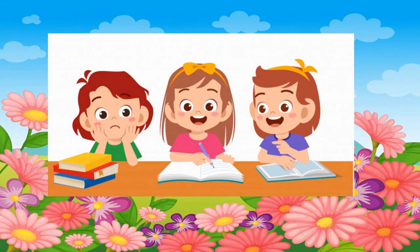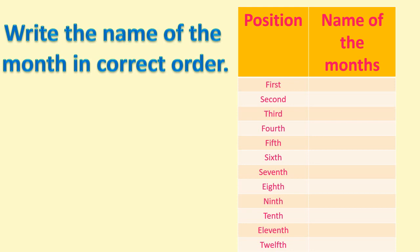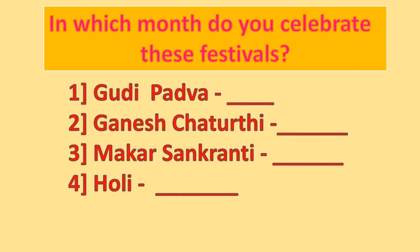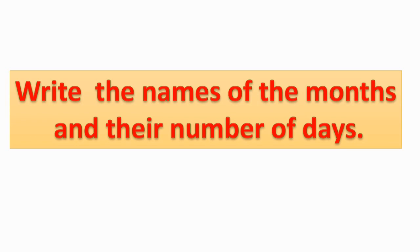Homework: arrange the months in the correct order — positions 1st to 12th are given, write the name of each month. Also, which month do you celebrate these festivals? 1st: Gudi Padwa — blank. 2nd: Ganesh Chaturthi — blank. 3rd: Makar Sankranti — blank. 4th: Holi — blank. Write the names of the months and their number of days.